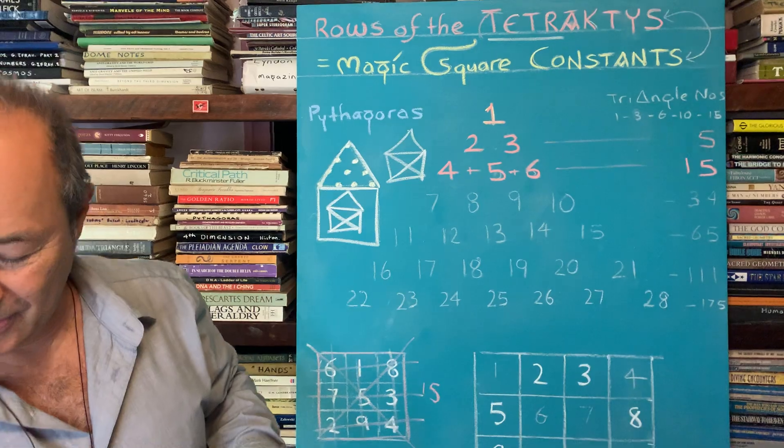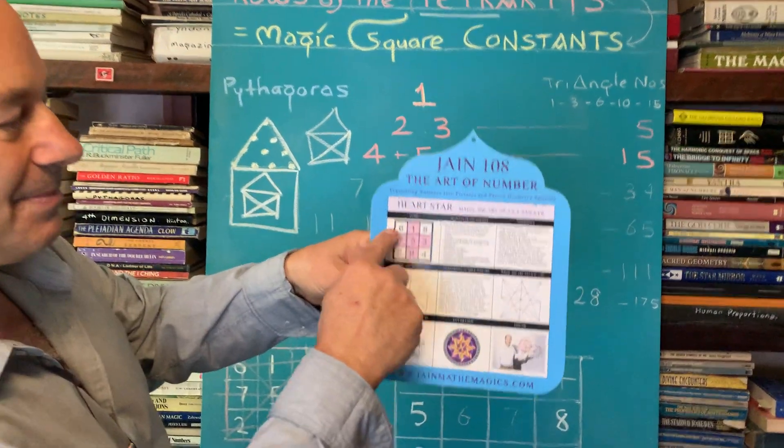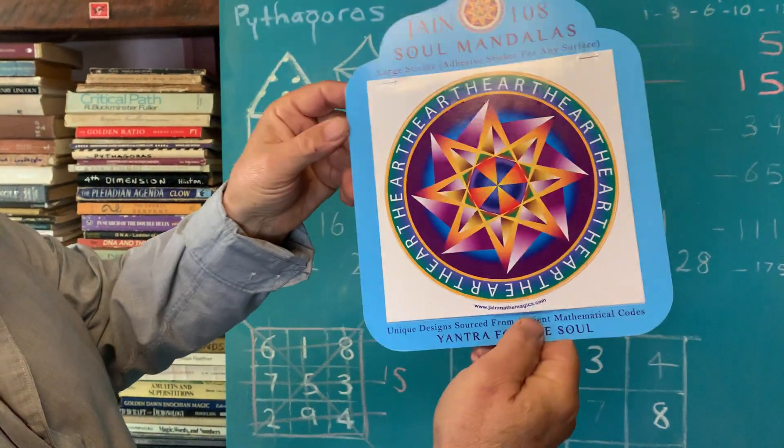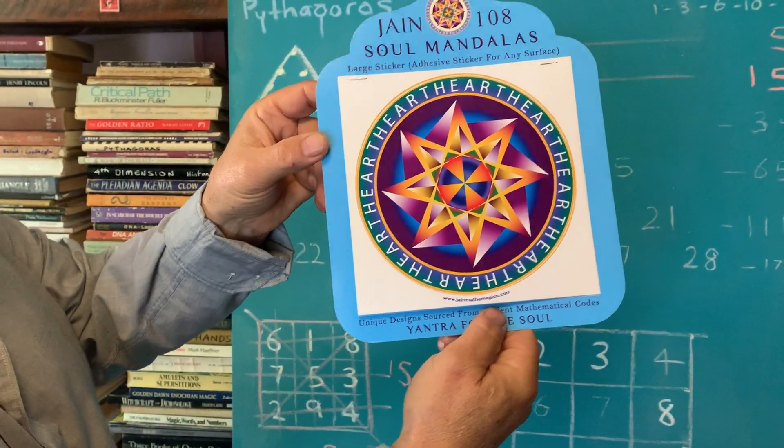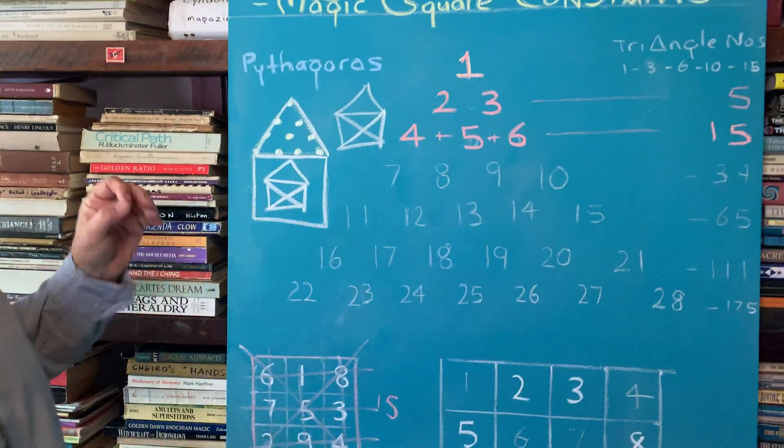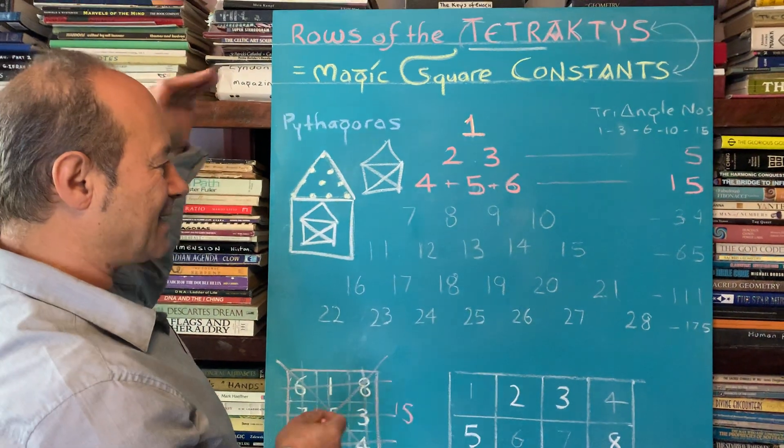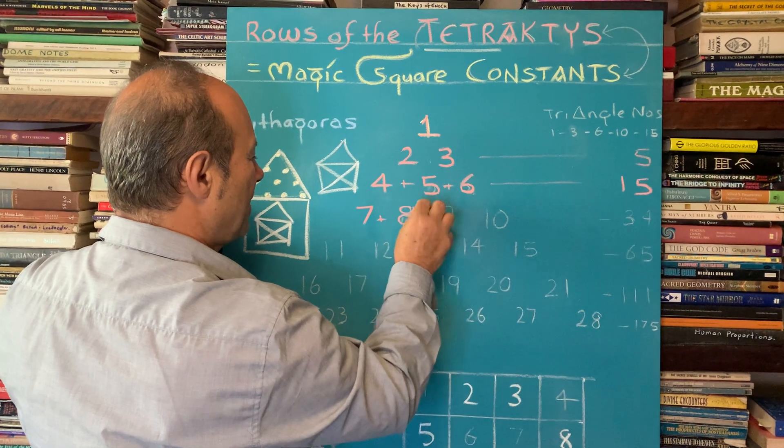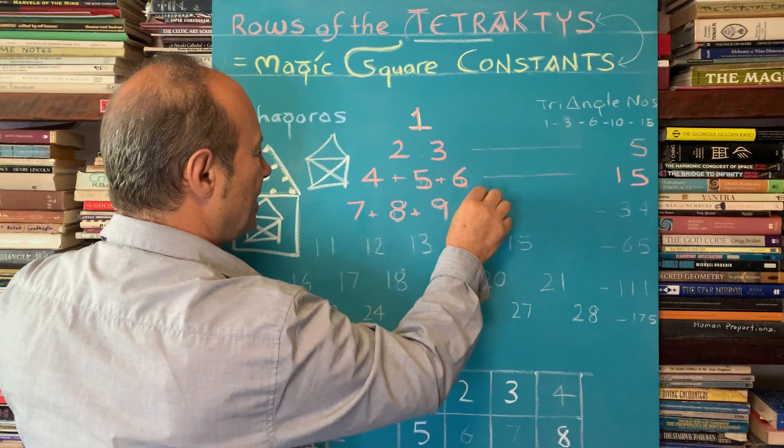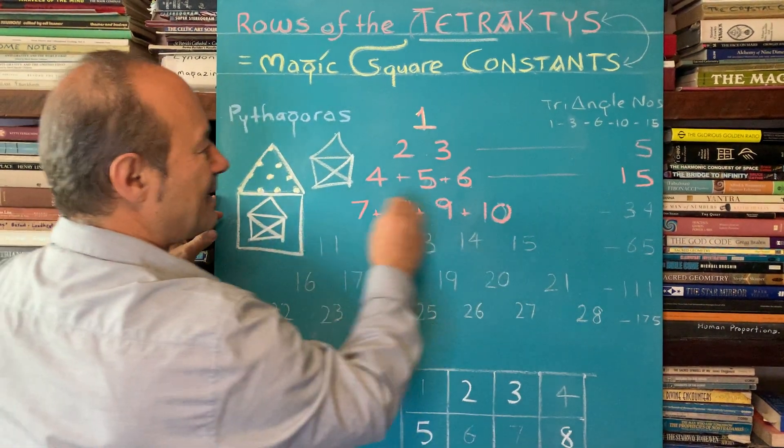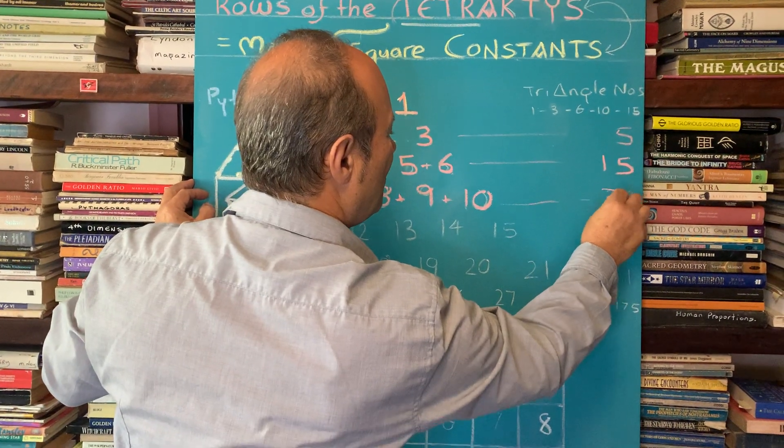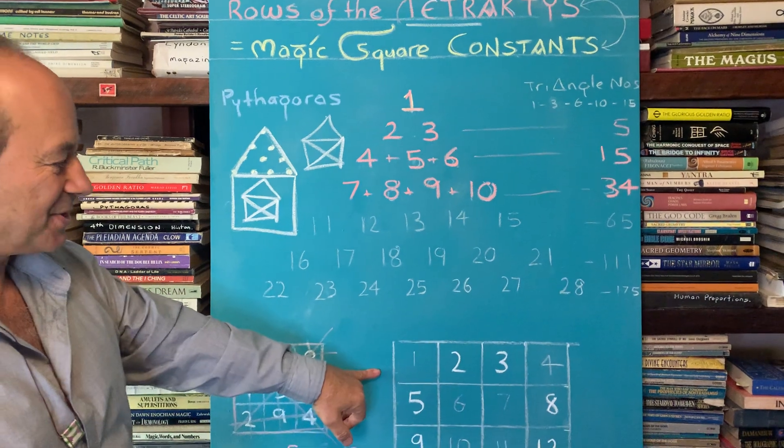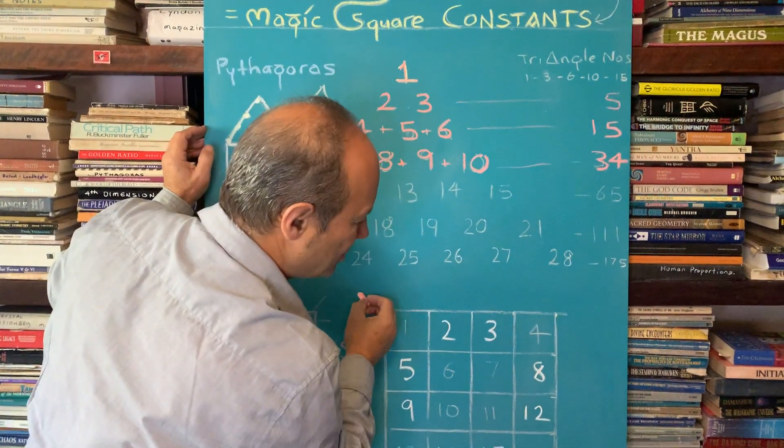And when we turn these numbers into a pattern by joining one, two, three in order, you end up with a beautiful yantra. Yantra means a device, a machine, a tool to access higher knowledge. So after six, we've got seven plus eight plus nine plus ten adds up to 34. And 34 is the next magic square. It's called the magic square constant.